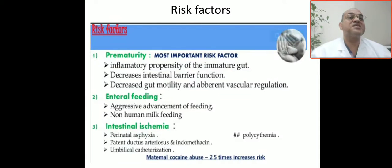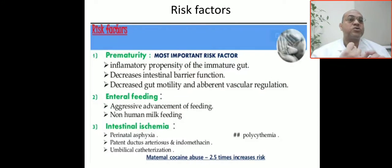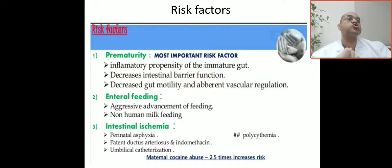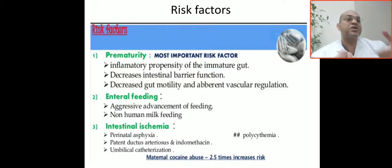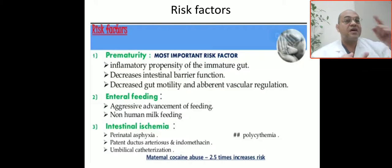What is the risk factor in this case? This patient was premature — 28 weeks — which is the most important risk factor for intestinal perforation and necrotizing enterocolitis. Prematurity is the primary risk factor. What is the next risk factor?